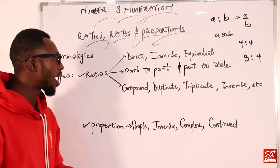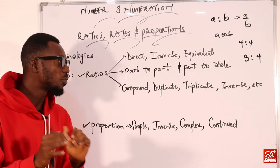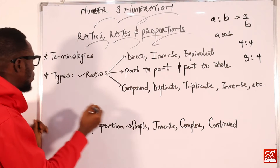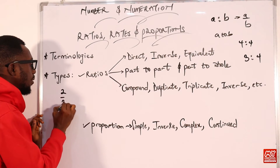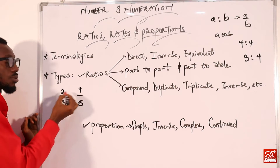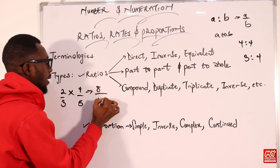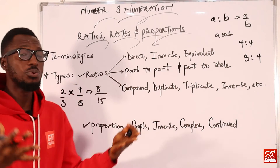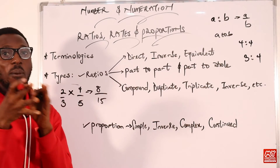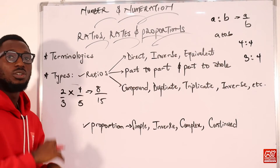Let's go to the next set: compound, duplicate, triplicate, inverse, and more. Compound ratio means bringing more than one ratio together. If I have 2 over 3 and 4 over 5, the compound of these will be 8 over 15. Just like a compound sentence, you are bringing multiple items together — this amounts to compound ratio.